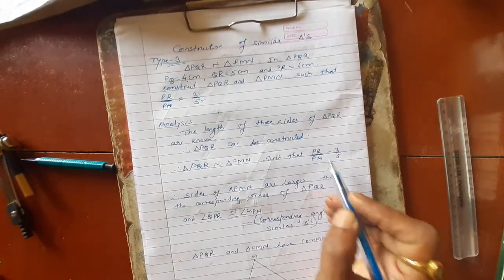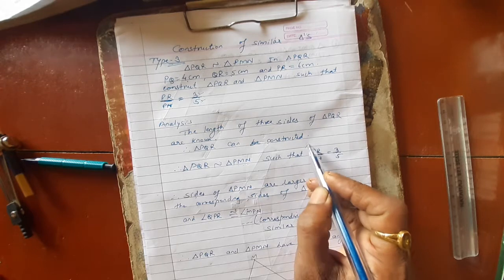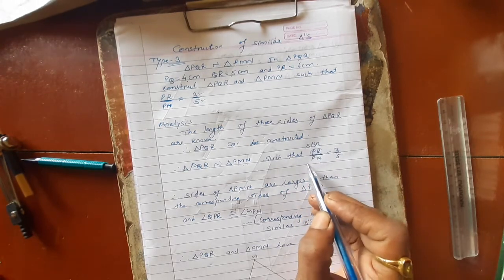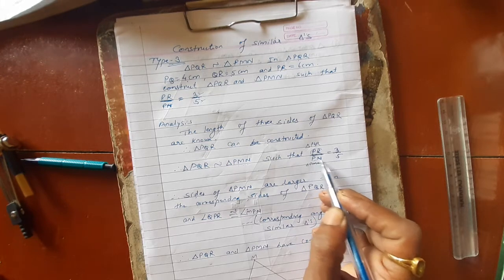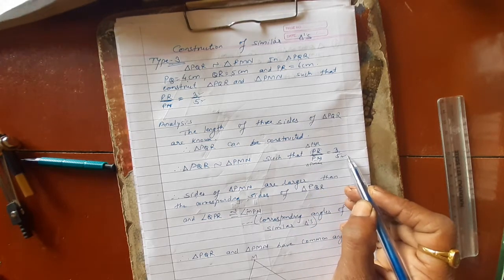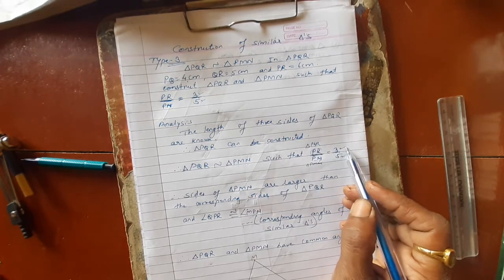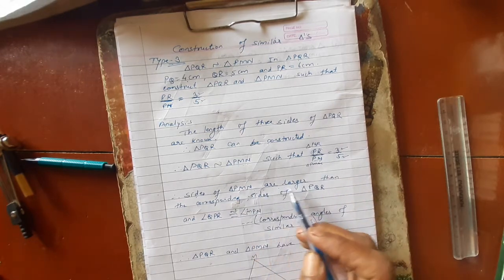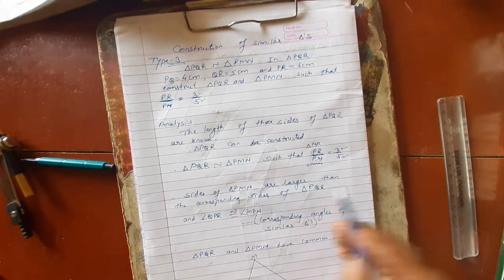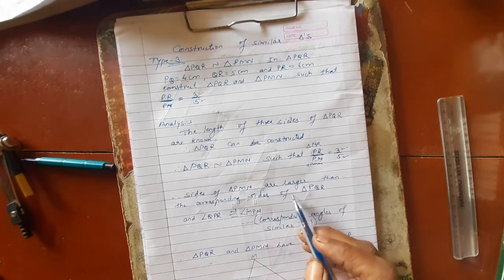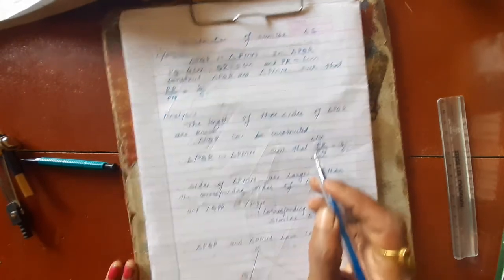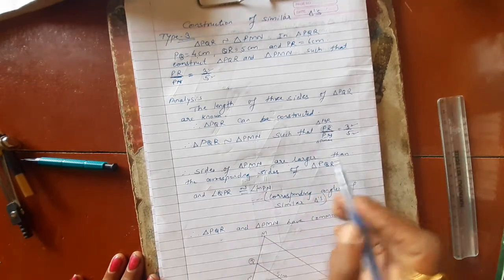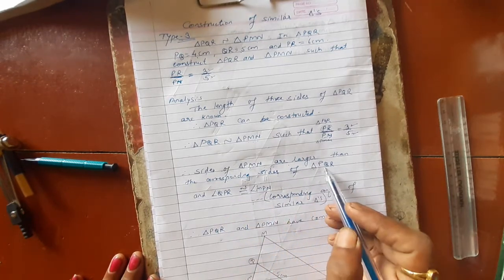See here: triangle PQR has one side PR and triangle PMN has one side PN. PN's measurement is smaller and PR's measurement is smaller, which means PMN is a larger triangle — its sides are larger. The corresponding sides of triangle PMN are larger than the sides of triangle PQR.